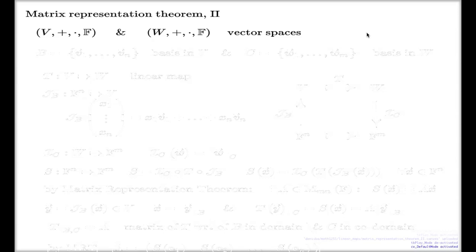In order to present the matrix representation theorem I will need to fix two bases, one in the space V and one in the space W. I'll use these notations: v₁, v₂, ..., vₙ will be the set of vectors which is the basis in V.